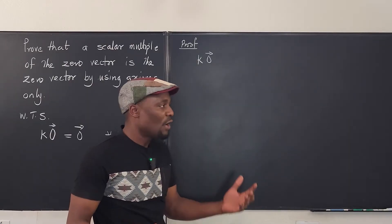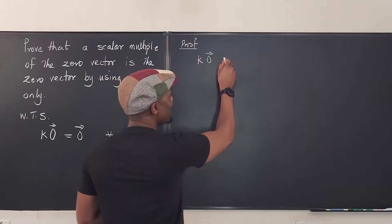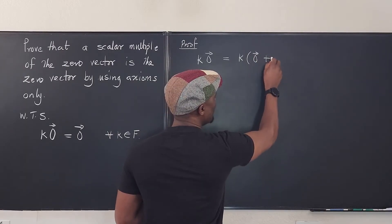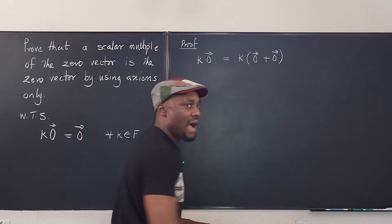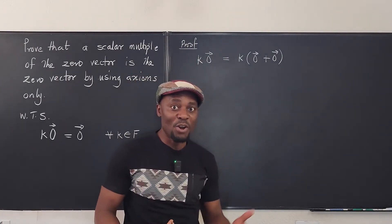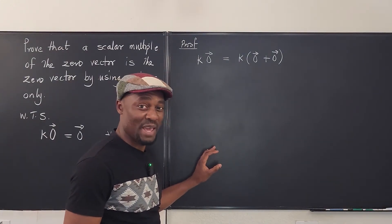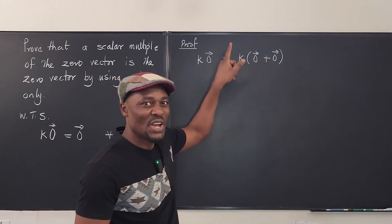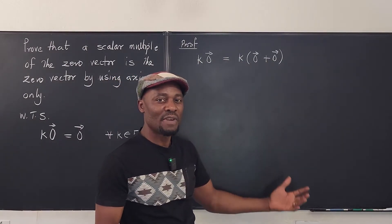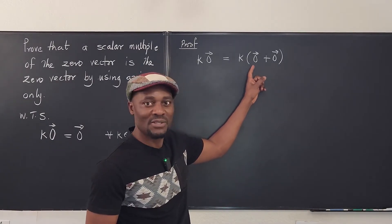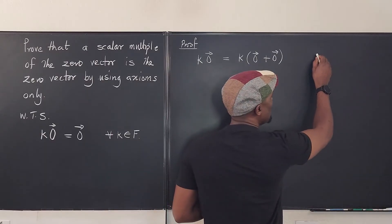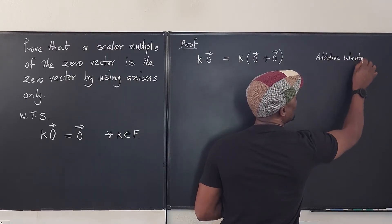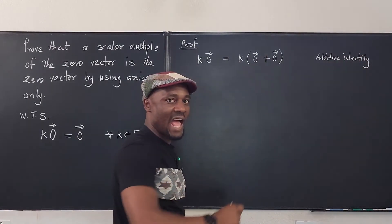You have to start using all the axioms — think of what you can do. A smart trick is to say that the zero vector is the same thing as multiplying k by the sum of two zero vectors, i.e., k times (0⃗ + 0⃗). Why are we allowed to do this? It's because one of the axioms states that in every vector space there is a zero vector such that when you add it to any vector it does not change it — the additive identity. So adding the zero vector to the zero vector doesn't change it.